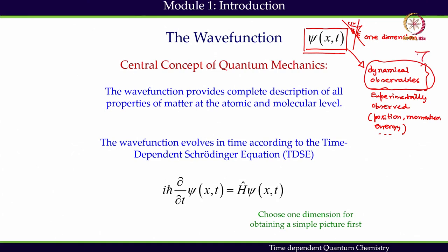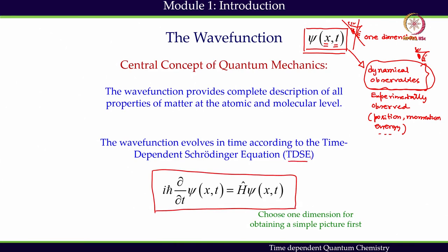The wave function has to be converted in a certain way to connect to the dynamical observable, which we can observe through an experiment. We will discuss the meaning of the wave function in this class, because clarification of its meaning is very important for the rest of the course. The wave function, which is a function of position and time, evolves according to the time-dependent Schrödinger equation. This is often abbreviated as TDSE, and it is first order in time.